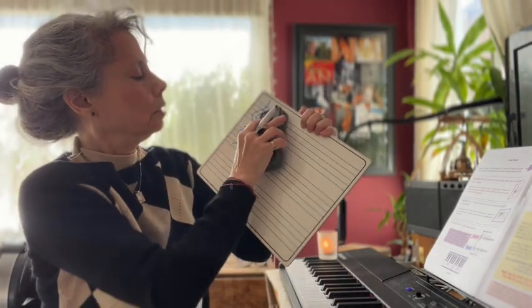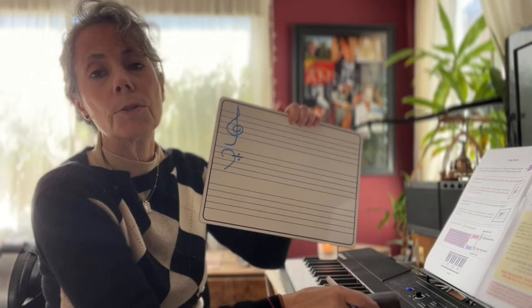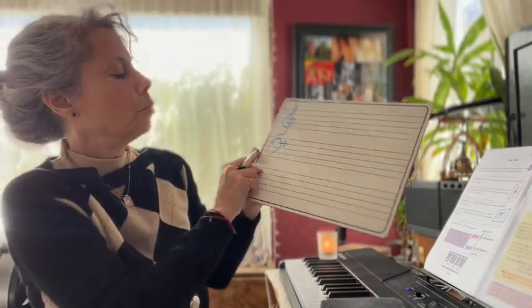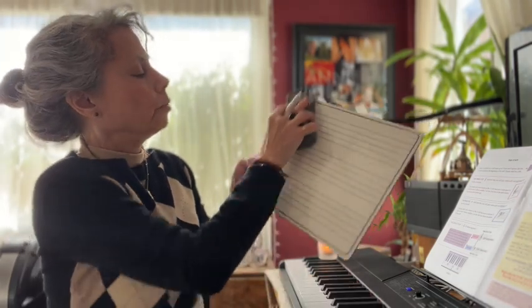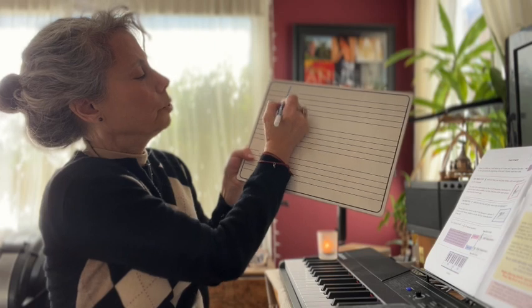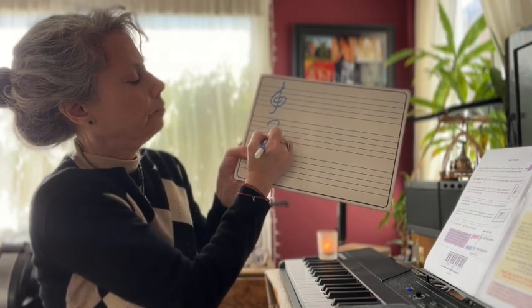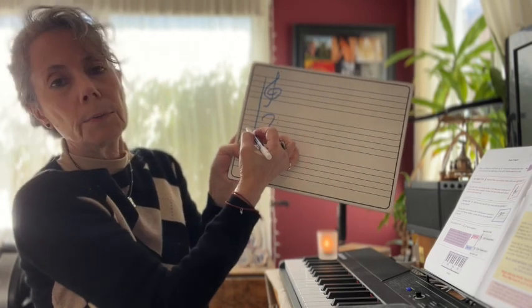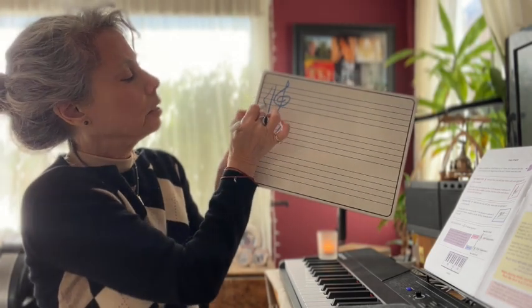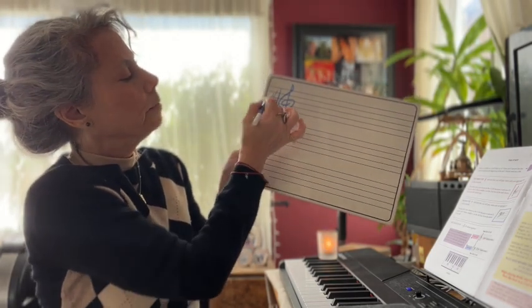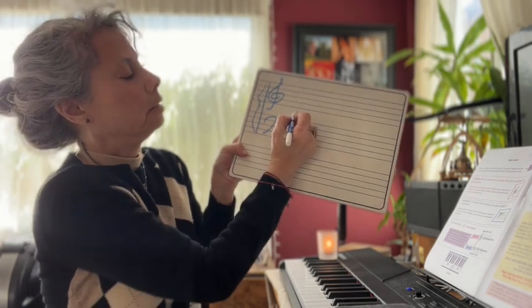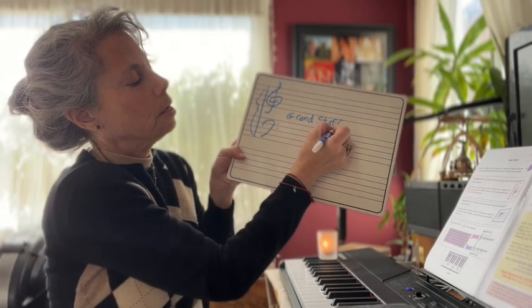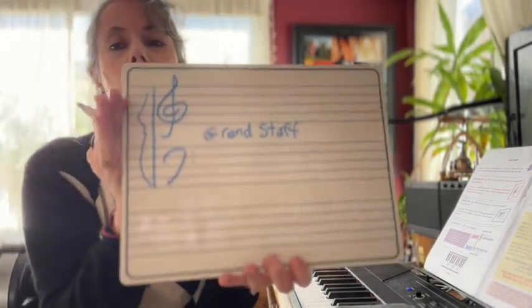Now, piano is one of the few instruments that uses both clefs, both the G clef and the F clef. So we have something called the grand staff, which means it encompasses both the G clef and the F clef. They are linked together with a bar line. We call this a bar line and something called a brace. It's got a brace and a bar line, and that together is the grand staff. And we use two hands for the grand staff.